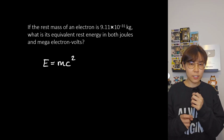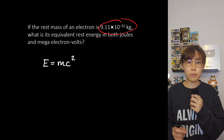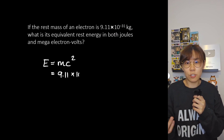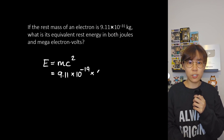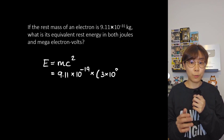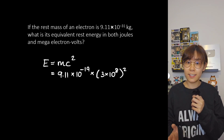The mass in this question is already given in the appropriate units, which is kilograms, so we can substitute it straight into the equation. The speed of light in a vacuum is 3 times 10 to the power of 8 meters per second.